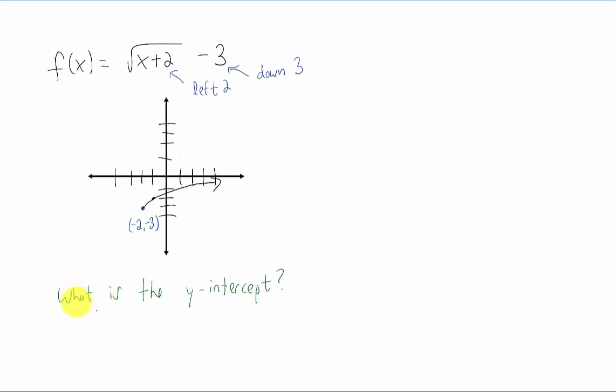If we want a little bit more detail, we could start asking questions like, what is the y-intercept? And we know that to find a y-intercept, we can always just plug in x equals 0. Replace x with 0 in the function, you get the square root of 2 minus 3.